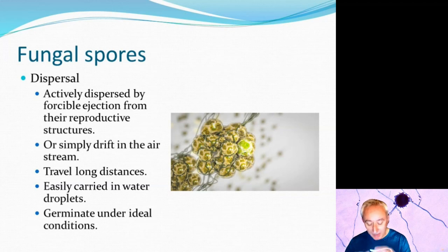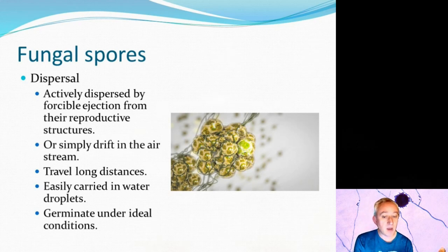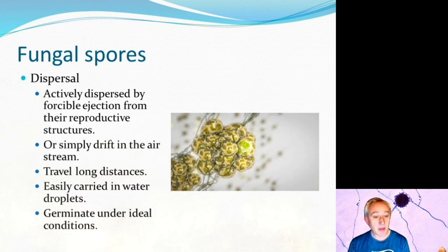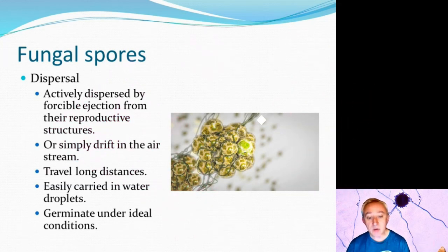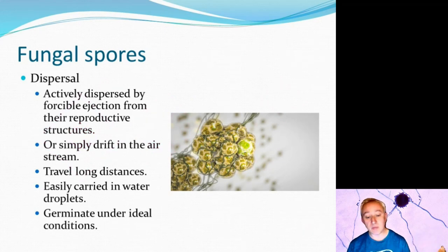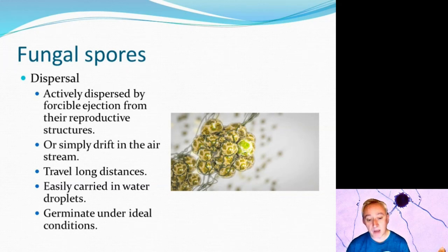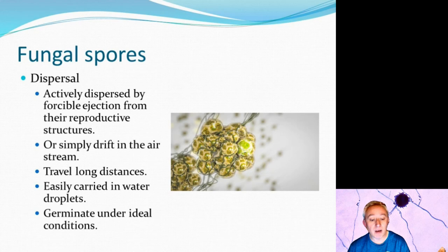Another key difference is that bacterial spores are static — they remain in one place unless physically removed. However, fungal spores can travel considerable distances depending on the fungus and prevailing conditions. The distance traveled depends on the force of dispersal and whether any other vectors are at play, such as air streams or water droplets. Fungal spores are also more likely to germinate when conditions are optimal compared with bacterial spores.